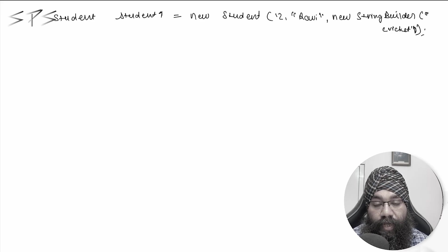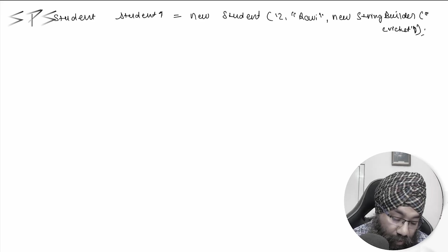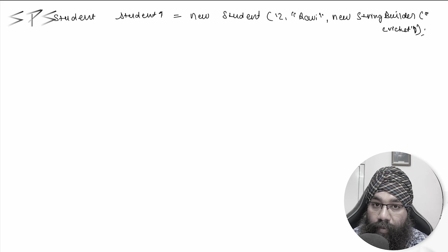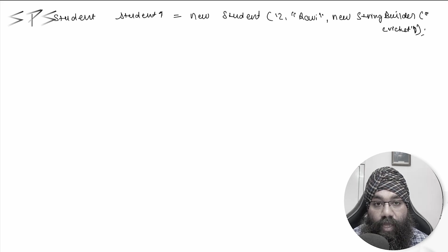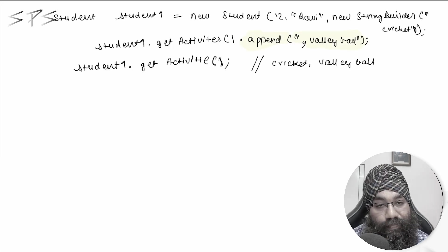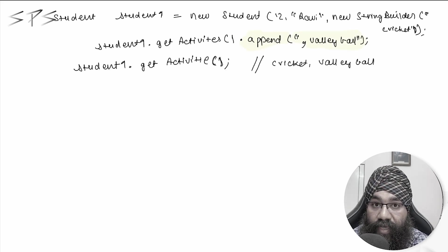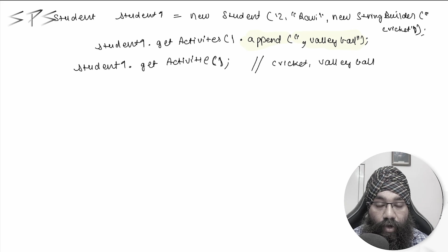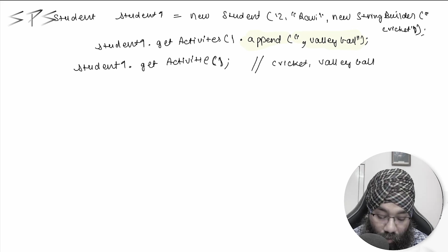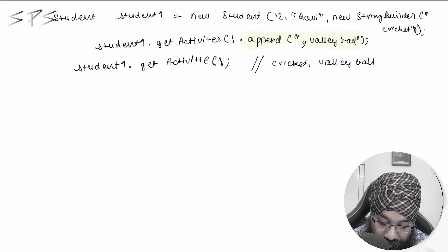Now this object is created and you don't have any setters. So ideally, you should not be able to modify any property in this class. But there is a big catch. You can see that our immutability has broken here. We wanted that after creating our object it should never be modified, but it got modified. So in order to fix this...